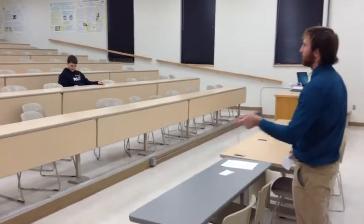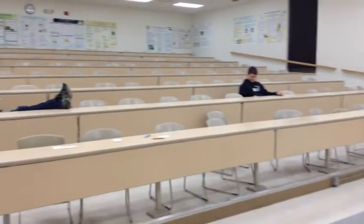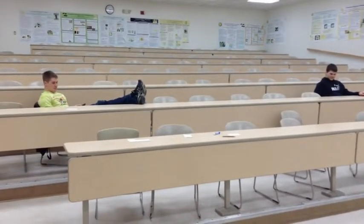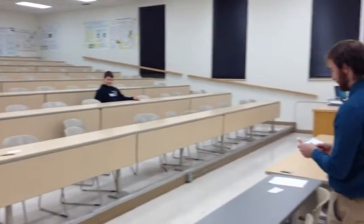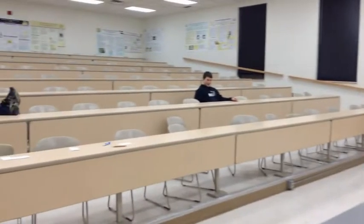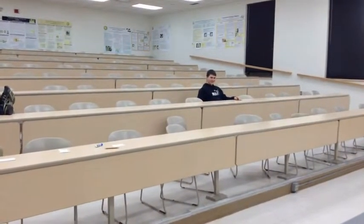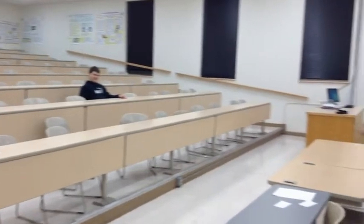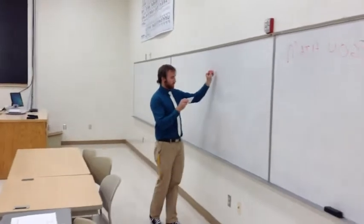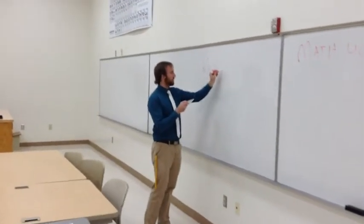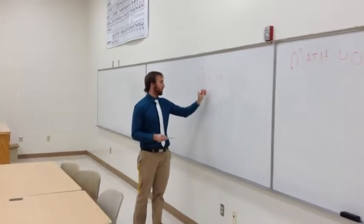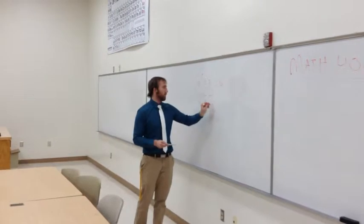So last class, what was the first thing we did? We talked about the definition of isometry and determined what Euclidean space was. That is right. But then what did we do? Then we showed that transformations preserve distance — that if the distance of P1 and P2 equals A, then the distance of the transformation of P1 and the transformation of P2 also equals A.